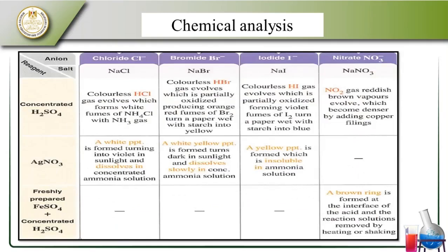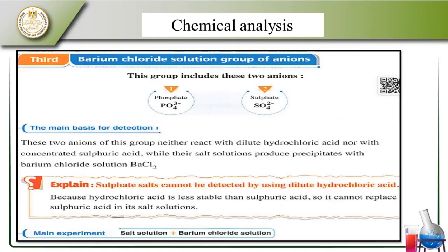This is a summary of what we discussed about HCl reactions — each group and how it is tested. Now let's look at each substance with barium chloride solution — the group of phosphate and sulfate. From barium chloride, these ions precipitate as barium phosphate and barium sulfate.